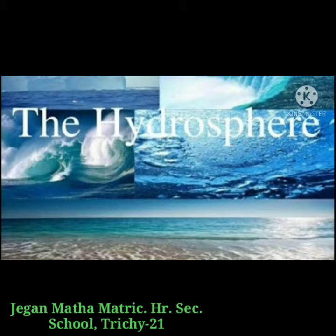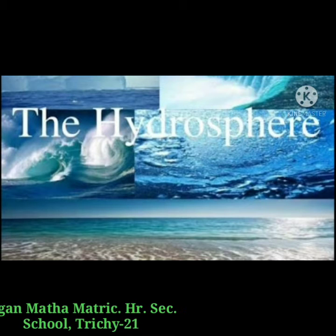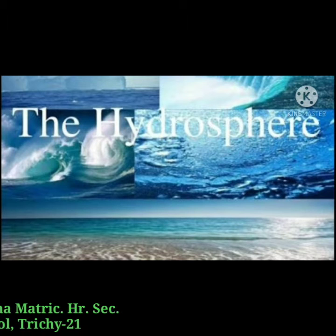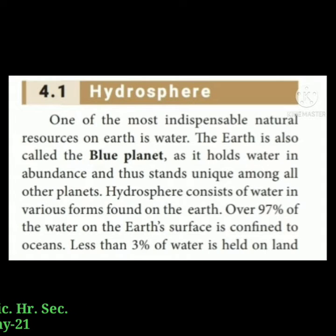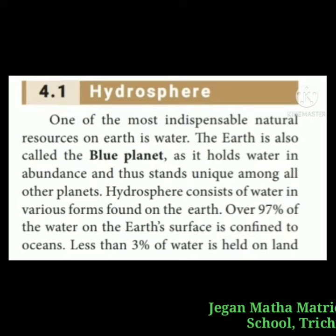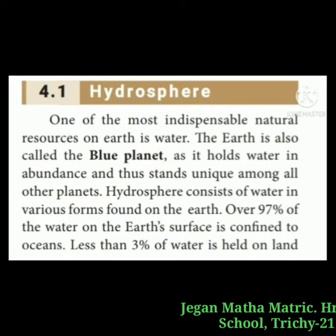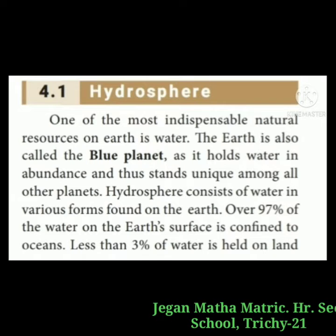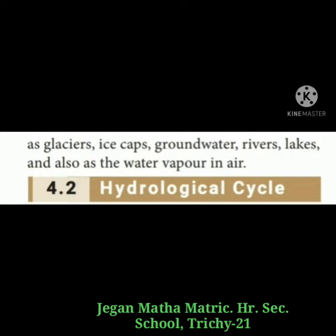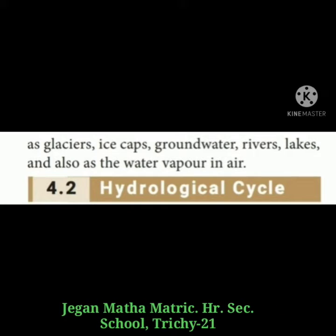Hydrosphere. One of the most indispensable natural resources on earth is water. The earth is also called the blue planet as it holds water in abundance and thus stands unique among all other planets. The Hydrosphere consists of water in various forms found on the earth. Over 97% of the water on earth's surface is confined to the ocean. Less than 3% of water is held on land as glaciers, ice caps, groundwater, rivers, lakes, and also as water vapor in air.